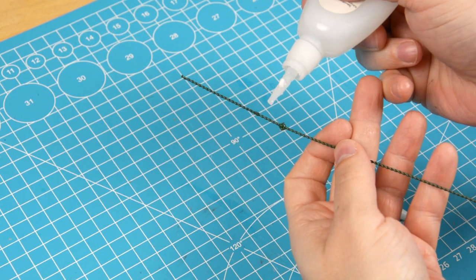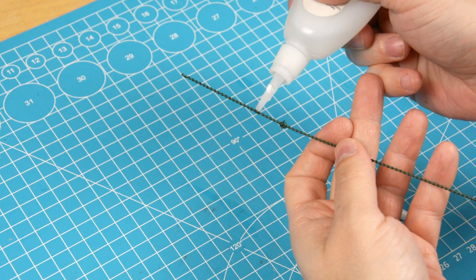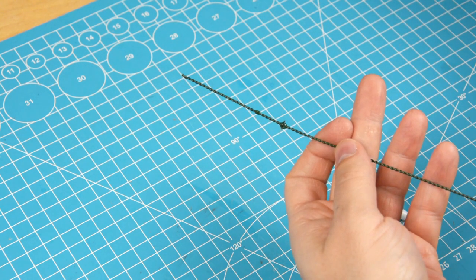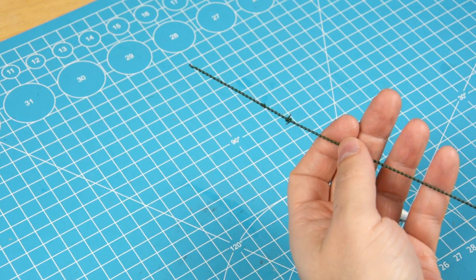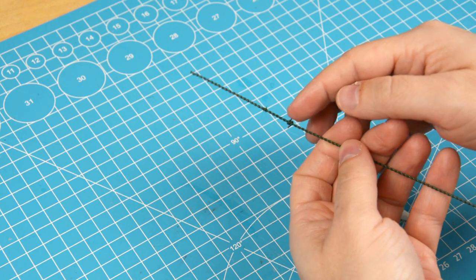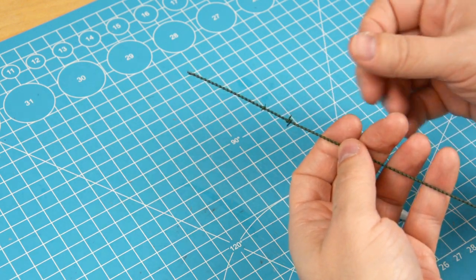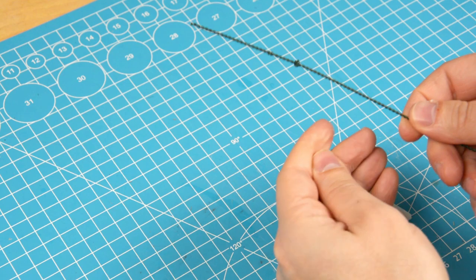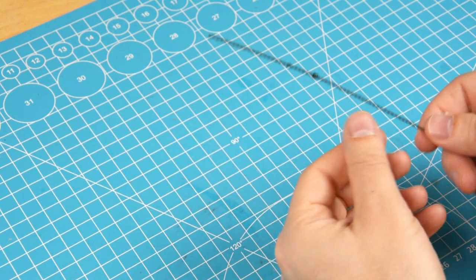I will, however, recommend that you don't add the barbs to the wire unless you're making a diorama or other display piece that no one is going to touch. If you're making barbed wire for wargaming, you'll just end up with holes in your hands and sleeves, or even worse, scratching the paint off your miniatures.